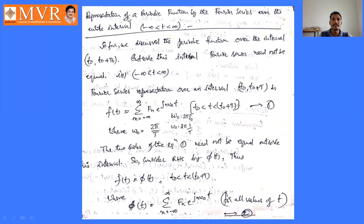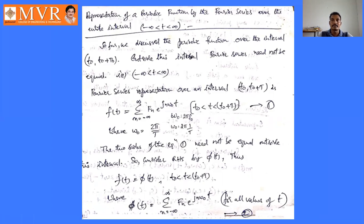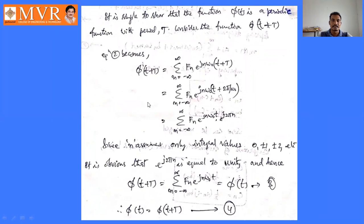Next we see the representation of a periodic function by Fourier series over the entire interval. As we already know, during a finite interval the Fourier series is valid, but beyond that we must check whether it remains equal. We consider the equation f(t) = Σ cₙ e^(jnω₀t). Defining φ(t) from this equation, we analyze it as a periodic function. For φ(t) to be periodic it must satisfy φ(t) = φ(t+T), and if it does, the Fourier series is valid beyond the finite interval as well.